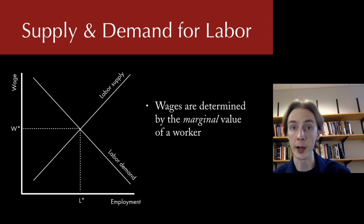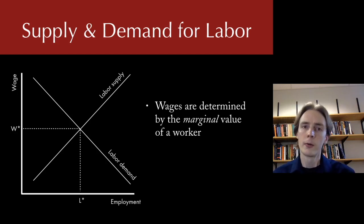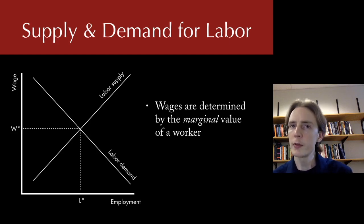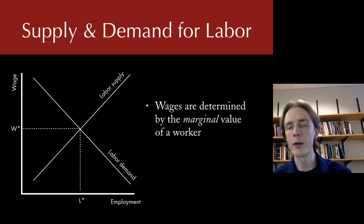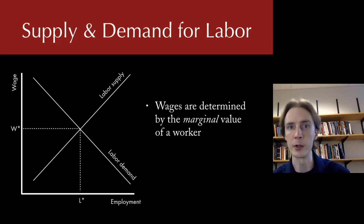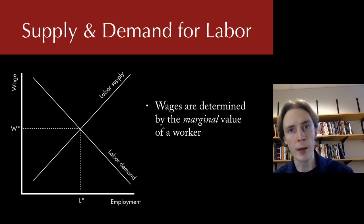The market for labor is equilibrated by the wage rate, giving us an equilibrium price (the wage) and equilibrium quantity (employment). That wage is determined by the value on the margin of a worker — how much revenue one additional worker would be able to generate. That's how wages get determined, just like goods.